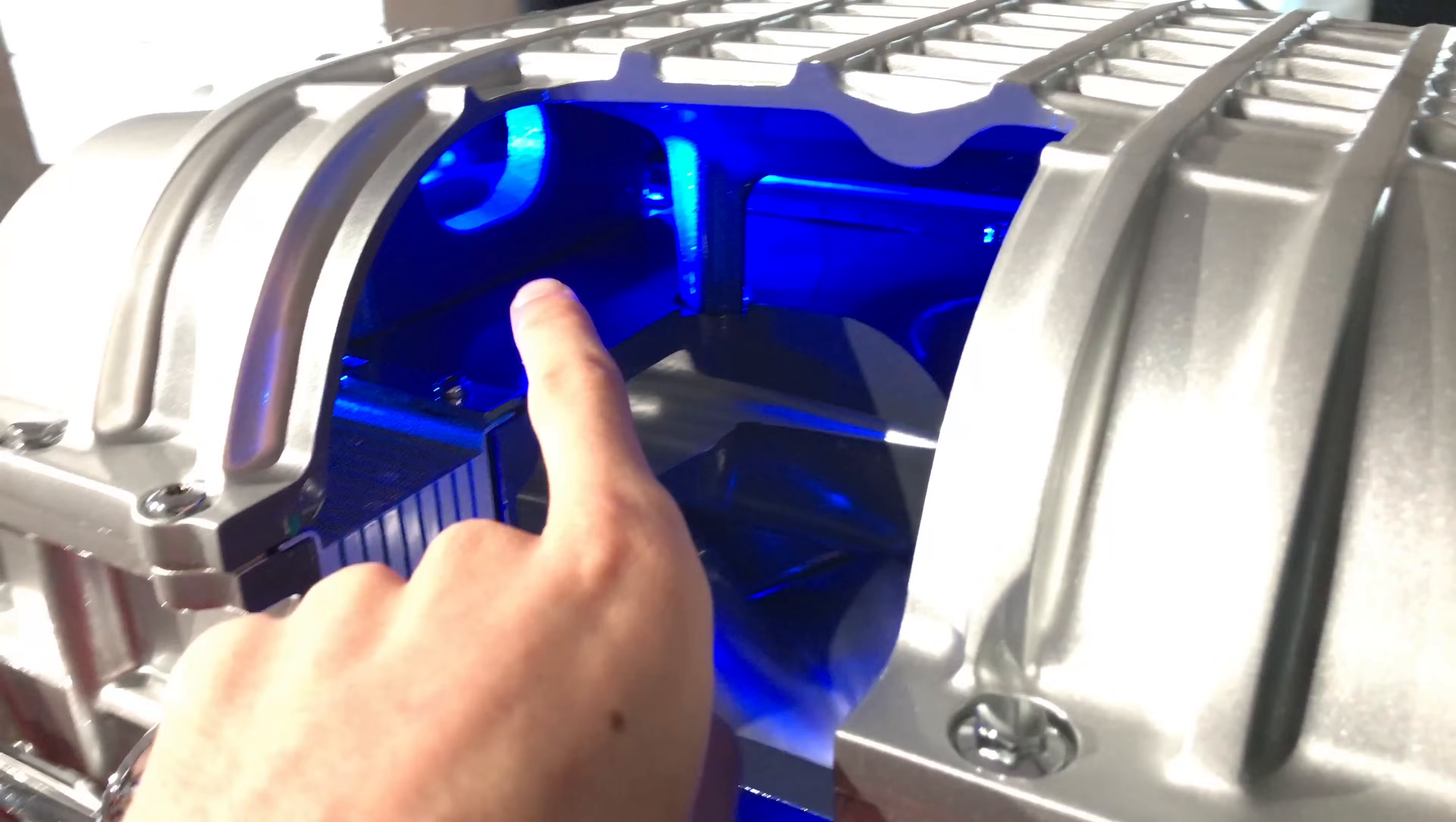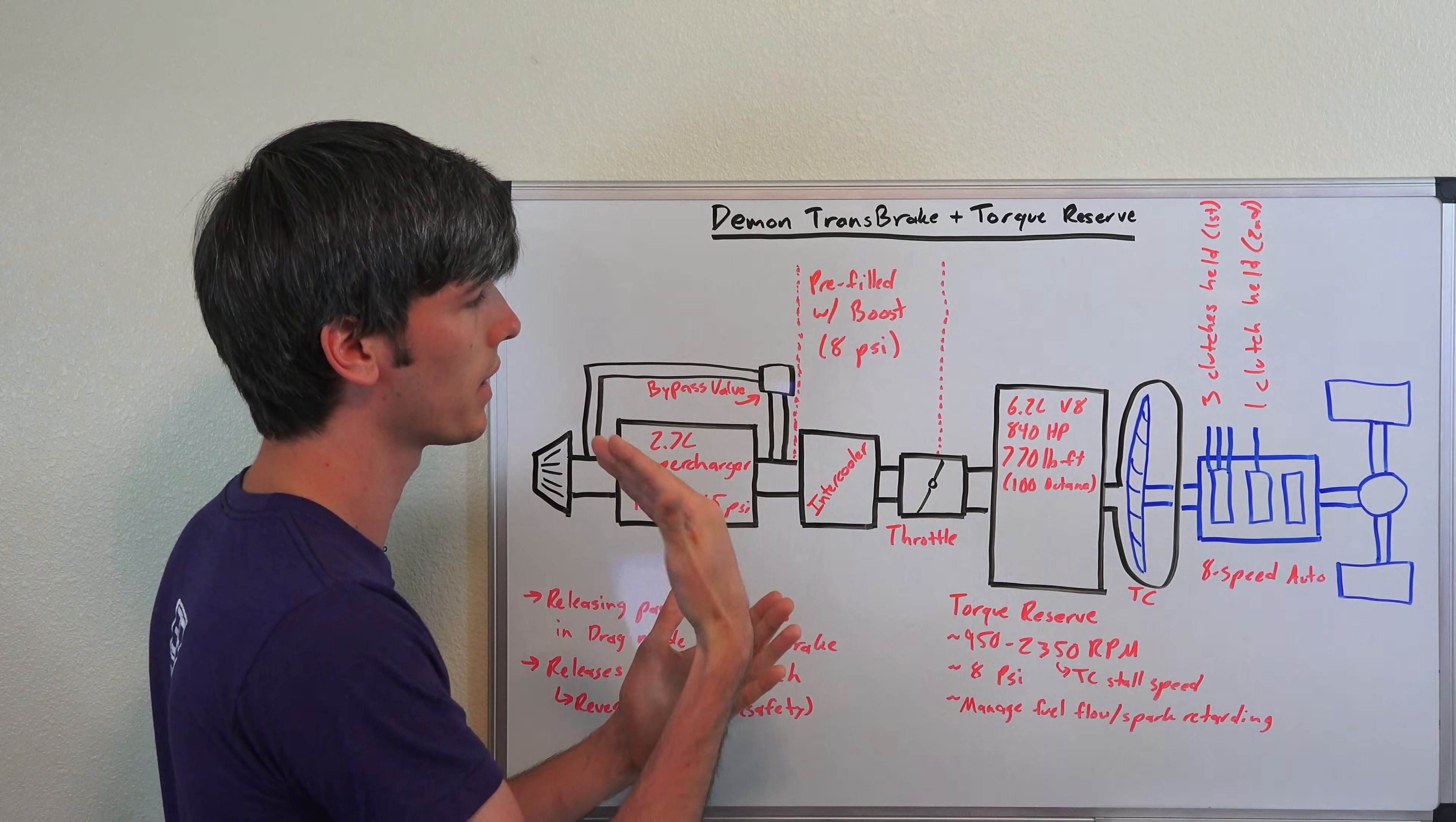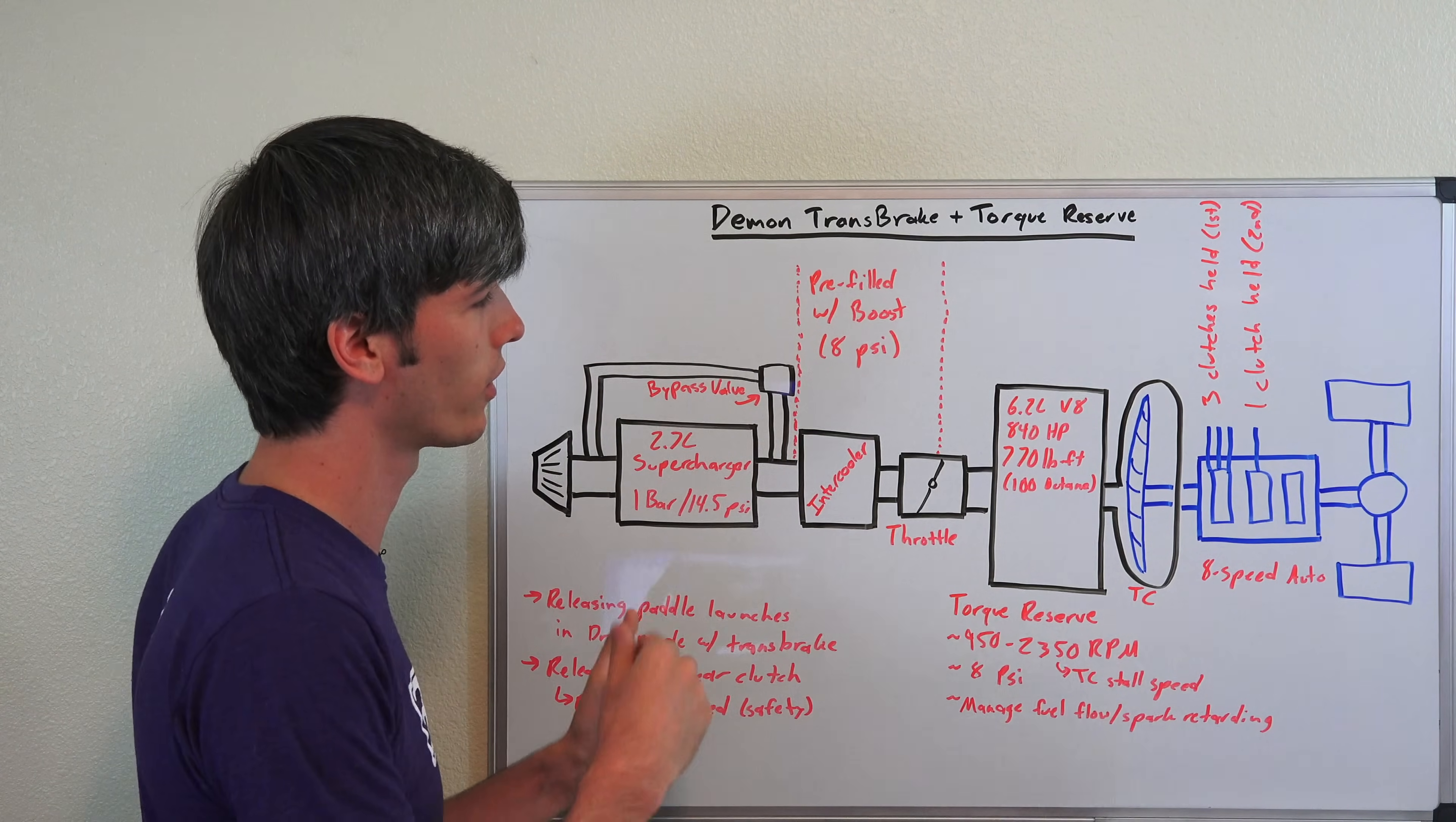And so what you're doing at a launch, let's say you pull up to the drag strip, you're waiting to launch, you put it in this torque reserve mode where you can build up the revs here and build up this boost. It closes off this bypass valve so that you don't recirculate that air, and then it uses the fuel flow and the spark timing—it retards that timing enough where you can hold the engine RPM between 950 and 2350 while still maintaining and holding 8 psi boost from the intercooler onward, so you've got that boost ready to throw down as soon as you're ready to launch.